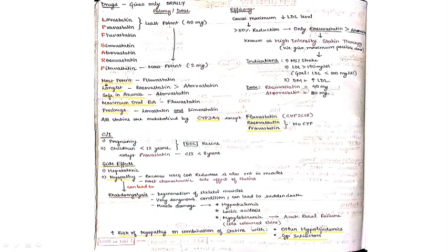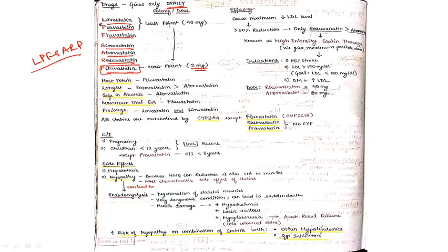All statin drugs are given orally. The drugs include lovastatin, pravastatin, simvastatin, fluvastatin, atorvastatin, rosuvastatin, and pitavastatin. The most potent is pitavastatin. The least potent are lovastatin and pravastatin. For MCQs: most potent is pitavastatin, longest acting is rosuvastatin, maximum oral bioavailability is seen with pravastatin.